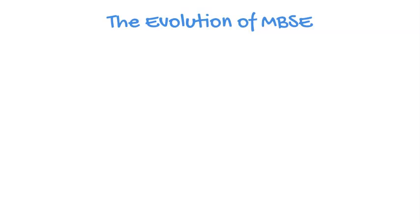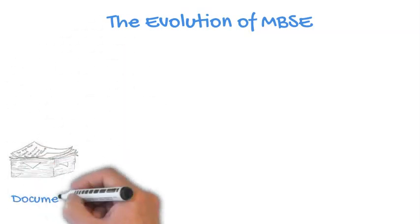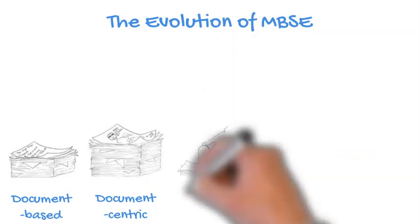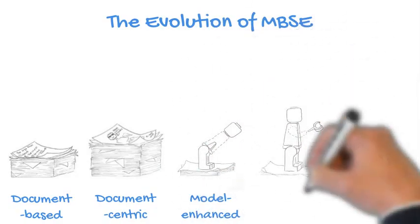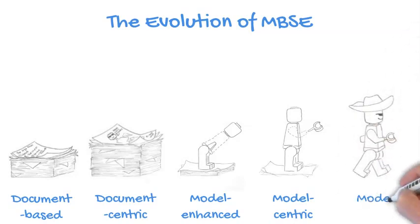Our start point is that MBSE evolution comprises a number of stages. We've identified five stages to illustrate the evolution: stage 1 document-based, stage 2 document-centric, stage 3 document-enhanced, stage 4 model-centric, and stage 5 model-based. These stages are shown here purely for illustrative purposes — we're not suggesting that every organisation will go through these as absolute distinct stages. It's a trend we need to understand in order to fully comprehend what we're trying to do with our MBSE deployment.